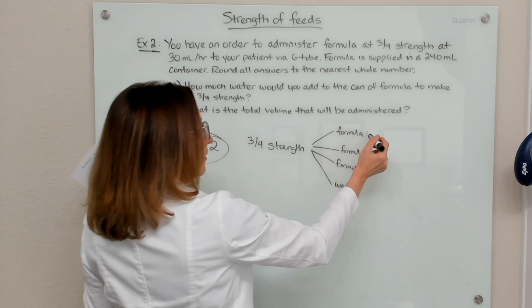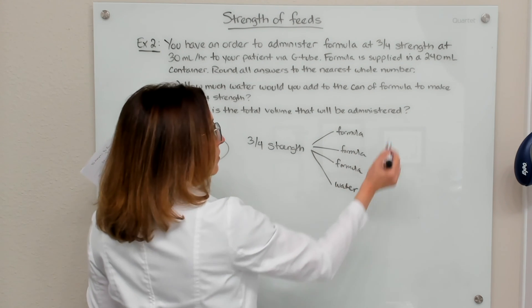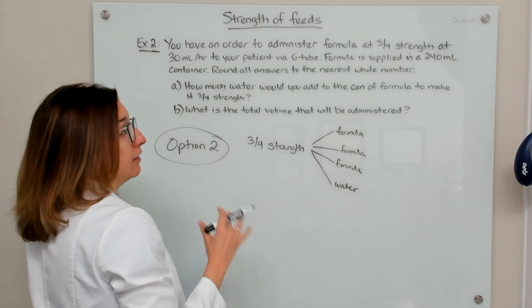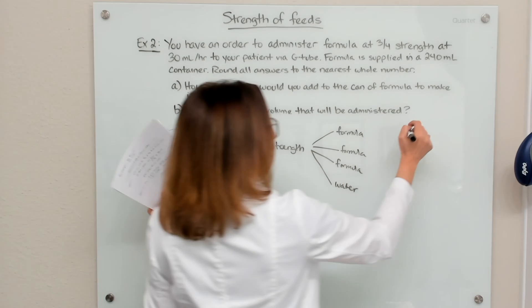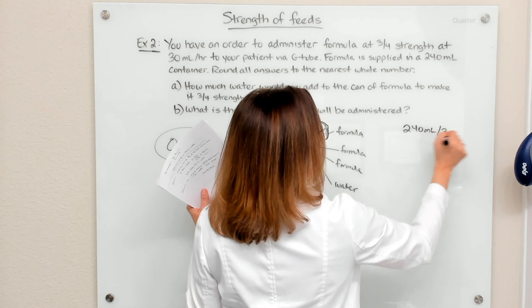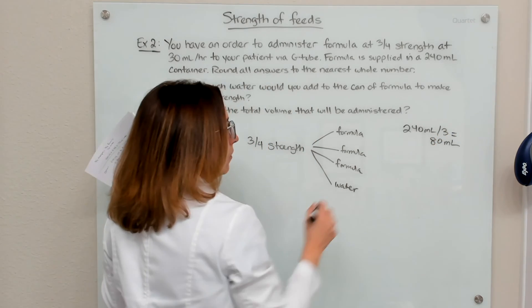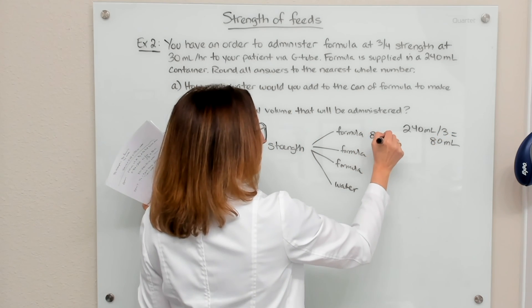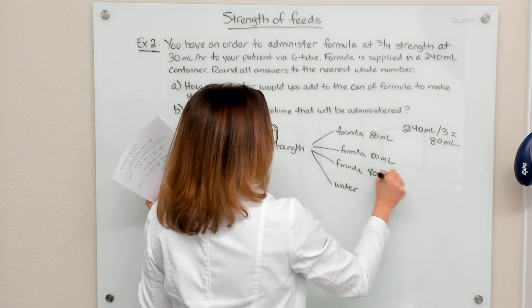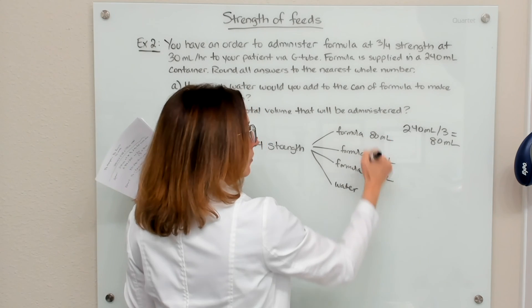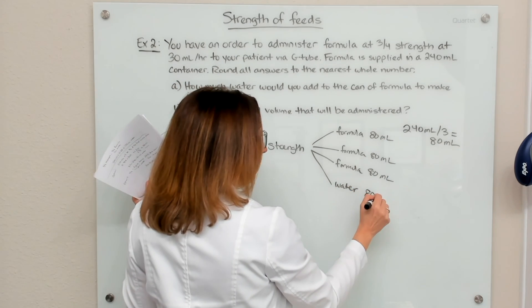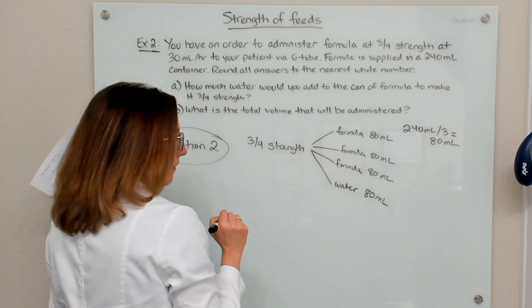So for these three formula parts, we're going to get those from the 240 ml container of formula. So if we take 240 ml divided by three, we get 80 ml. So each of these parts is 80 ml, right? 80, 80, 80, you add that up, that's 240 ml. But then we need to add that other part of water, right? So that's another 80 ml.